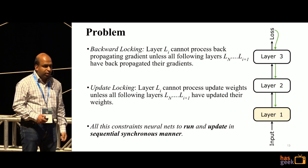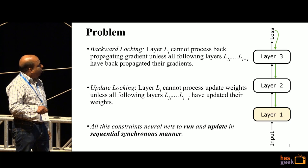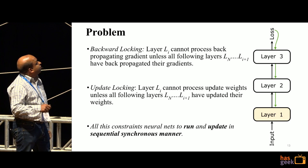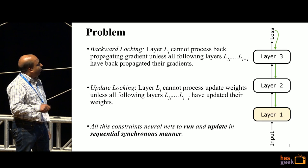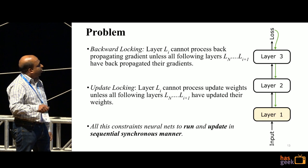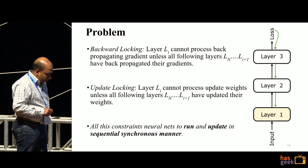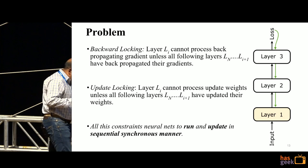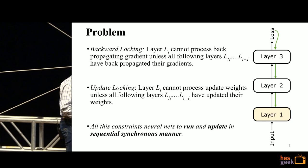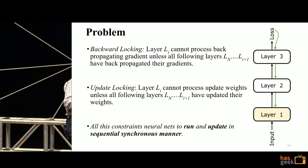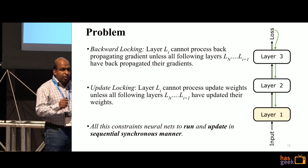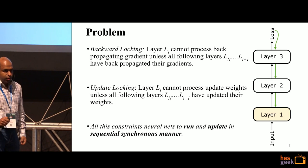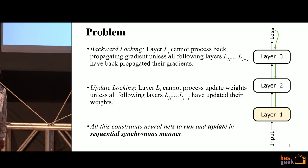Both together: in order to update each layer's weights, I can't do it until I have the gradient — the error signal. I cannot update until all the subsequent layers have done their computation and passed on the signal. Forward locking, backward locking, and update locking together force the network's layers to be trained in a strictly sequential manner.